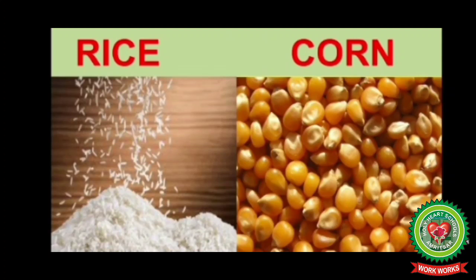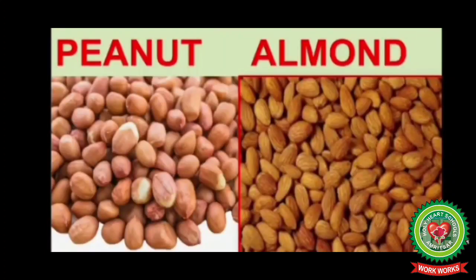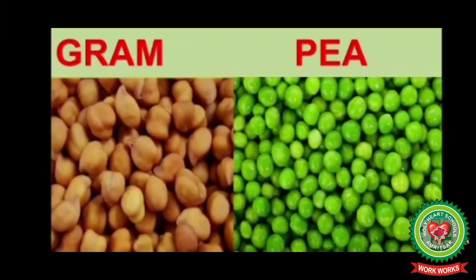Rice and corn are cereals, and we like to eat them. Peanuts and almonds are dry fruits. Gram and pea are pulses, and we also like to eat them.